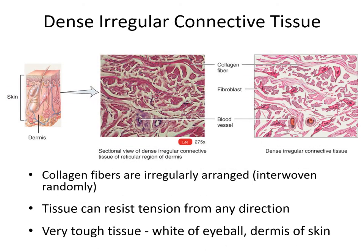In dense irregular connective tissue, we once again have a very tough tissue with lots of collagen, but the collagen bundles run in different directions because this tissue receives force from many different directions. A good example would be the sclera, or white of the eyeball. The eyeball is a sphere with fluid inside under pressure pushing out on the sclera, so it's being stretched in every direction — requiring collagen running as cables every which way to take stresses coming from all directions.